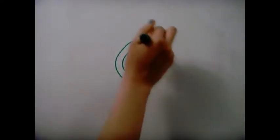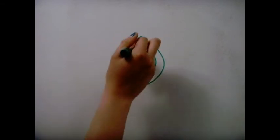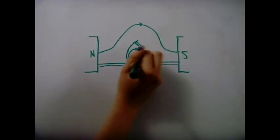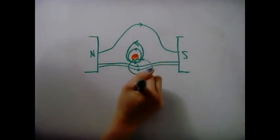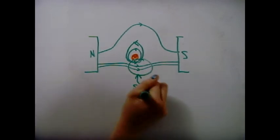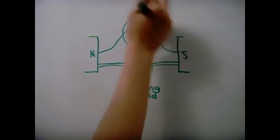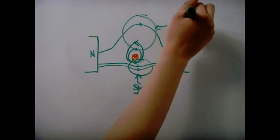Wires with a current produce a magnetic field. If the current-carrying wire is placed between a pair of magnets, there is an overlap in magnetic fields. Some of the field lines of the wire are in the same direction as that of the magnet, therefore it produces a strong field.